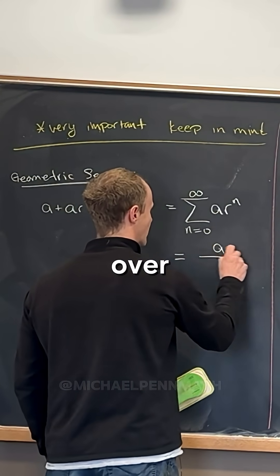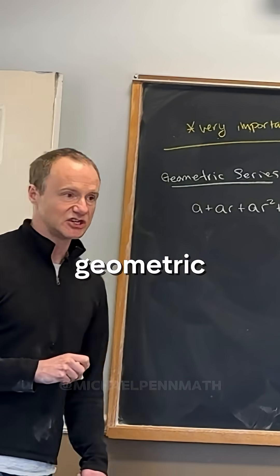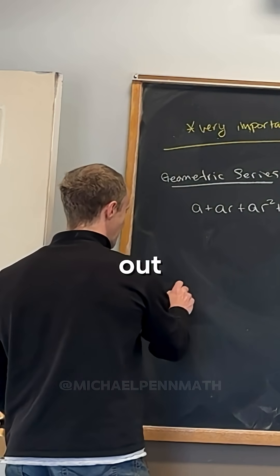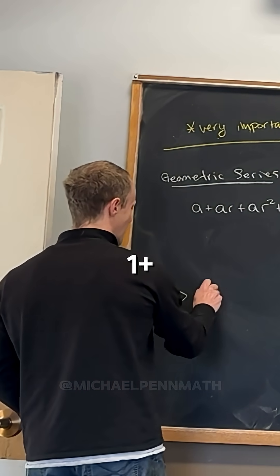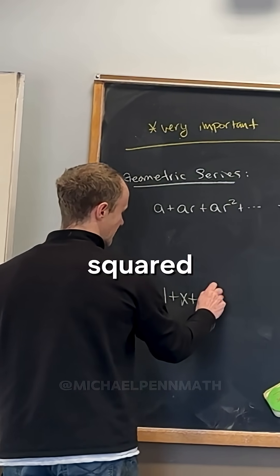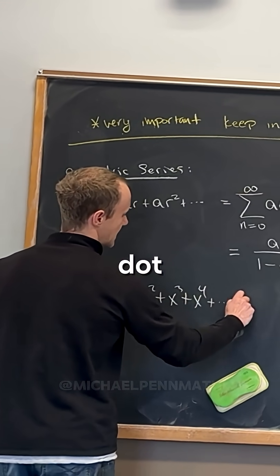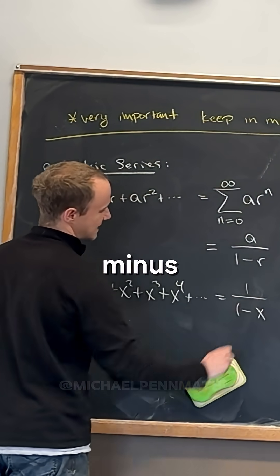And then the thing to remember is that this always adds up to a/(1-r). So this is the geometric series summation formula. We're going to get a lot of stuff out of this. Like if you take 1 + x + x² + x³ + x⁴..., that's going to sum to 1/(1-x).